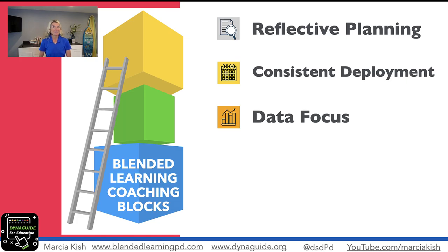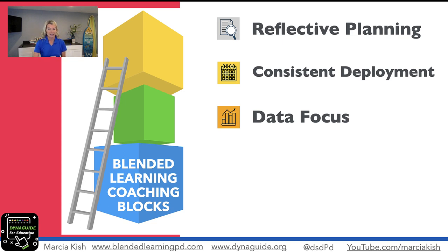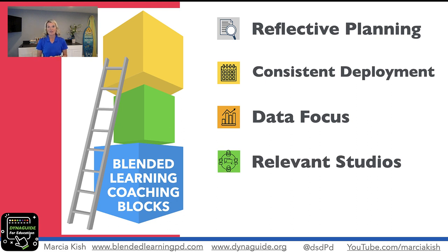In part one, we talked about reflective planning — how to look backwards to see where we can add in studios. Then we talked about being consistent, making sure studios are appearing at least once a week. Then we talked about how to really use data to drive instruction into small group instruction, and how to really push our students to that next level with data.